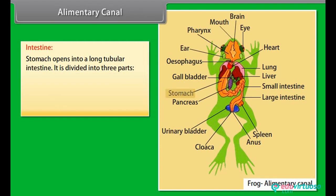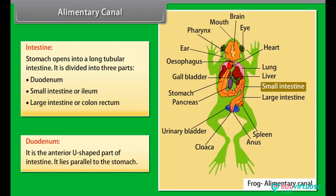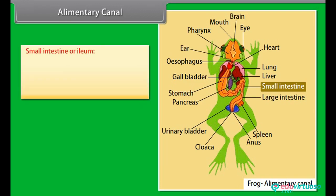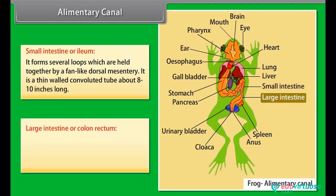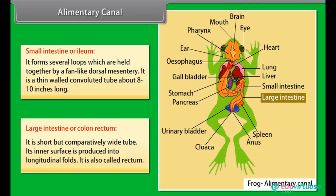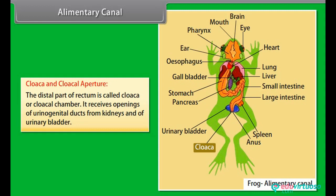The stomach opens into a long tubular intestine divided into three parts: duodenum, small intestine or ileum, and large intestine or colon. The duodenum is the anterior U-shaped part of the intestine lying parallel to the stomach. The small intestine or ileum forms several loops held together by a fan-like dorsal mesentery; it is a thin-walled, convoluted tube about 8 to 10 inches long. The large intestine or colon is short but comparatively wide, with its inner surface produced into longitudinal folds.